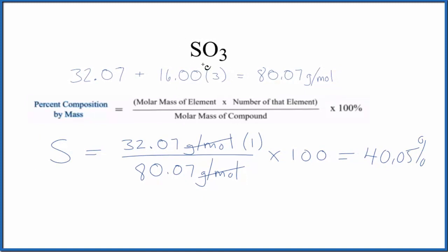What that means is if you have a mass of SO3, the sulfur trioxide, 40.05% of that mass will be because of the sulfur.